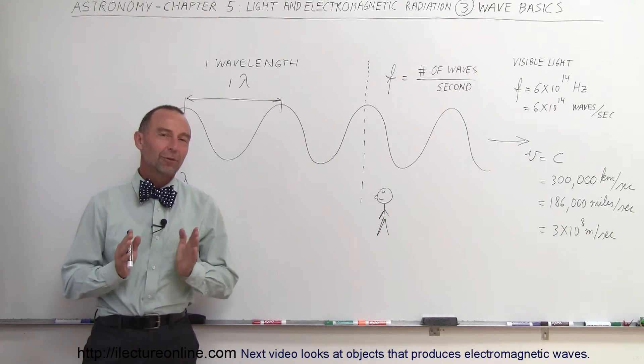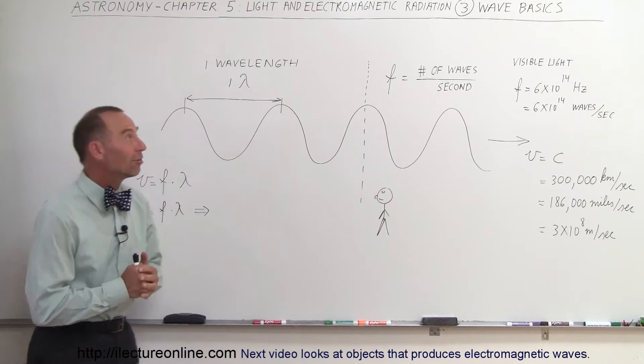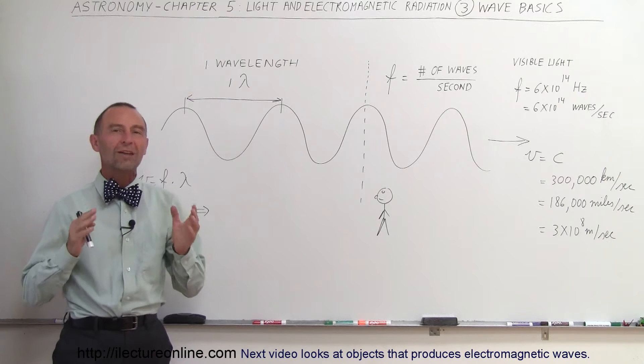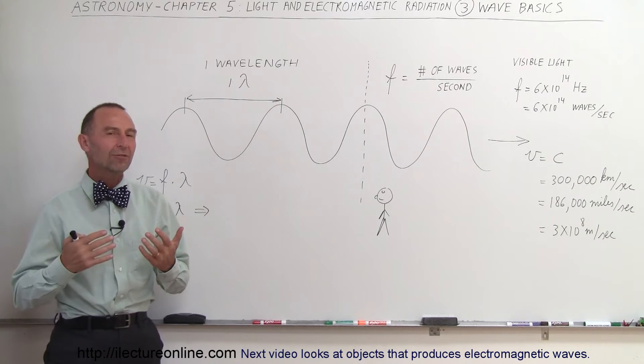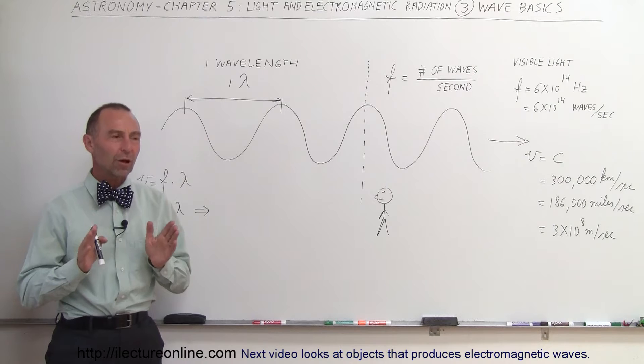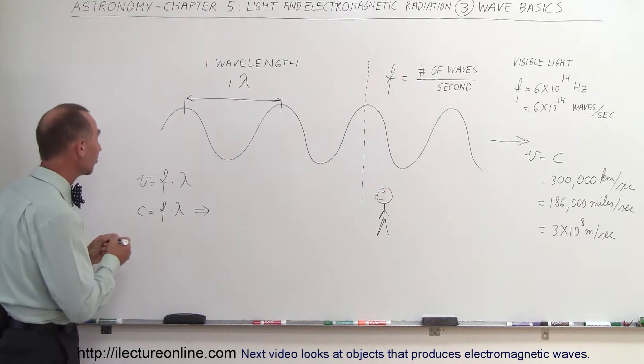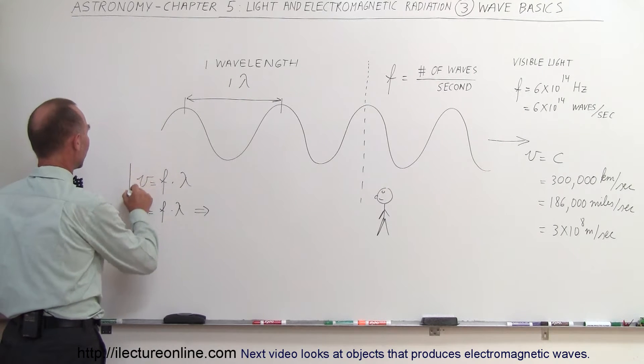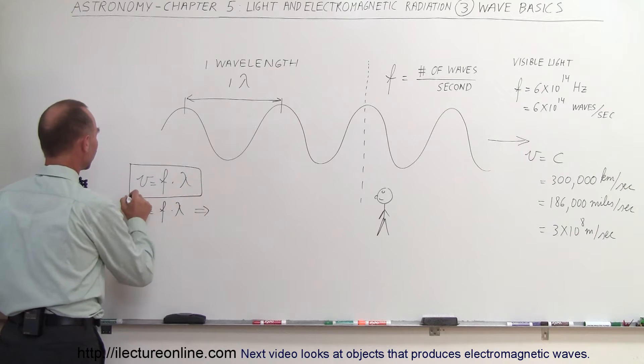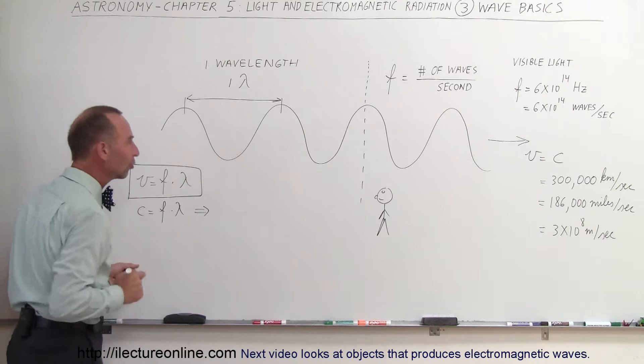Welcome to ElectronLine. For us to understand electromagnetic radiation better, we have to talk about the wave basics. What is a wave and what does it do? First of all, what we want to do here is talk about a very simple equation that the velocity of a wave is equal to the frequency times its wavelength.